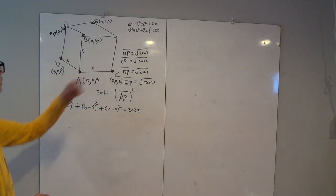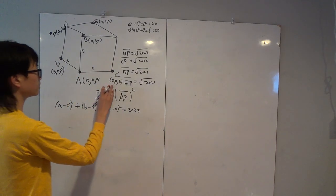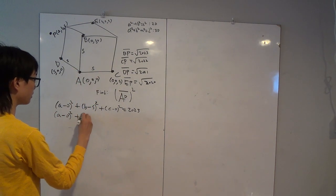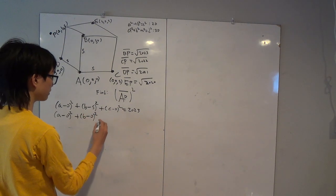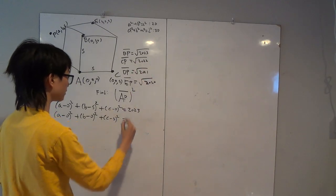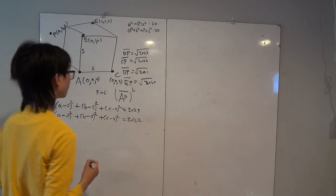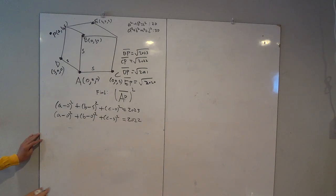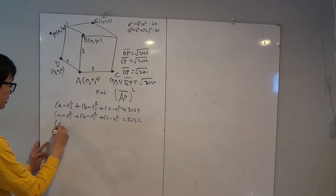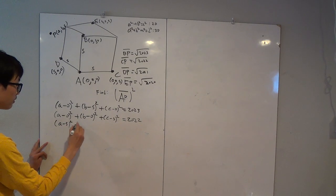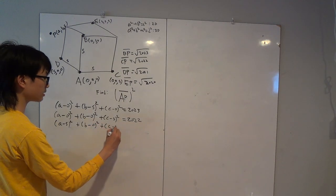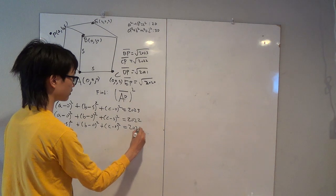Next, for CP — C is (0, 0, S) — we write: a² + b² + (c−S)² = 2022. And for DP — D is (S, 0, 0) — we get: (a−S)² + b² + c² = 2021.